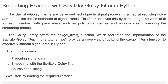The Savitzky-Golay filter is a widely used technique in signal processing aimed at reducing noise and enhancing the smoothness of signal trends. This filter achieves this by computing a polynomial fit for each window, with parameters such as polynomial degree and window size influencing the smoothing process.